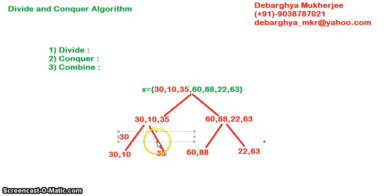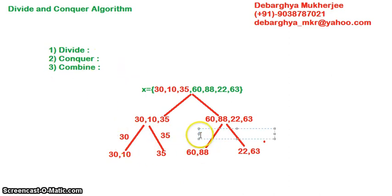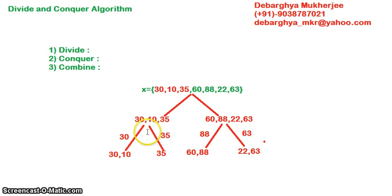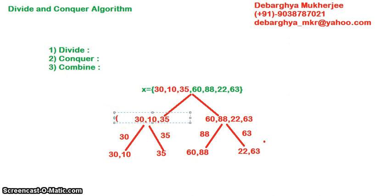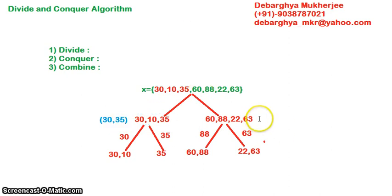Within 10 and 30, the maximum is 30. As 35 is the only number on its side, it is the maximum there. From the right side, 88 is the maximum in its pair, and 63 is the maximum in the other pair. Now we move to the combine part: from the left we have 30 and 35, giving us the set {30, 35}. On the right side we have {88, 63}.